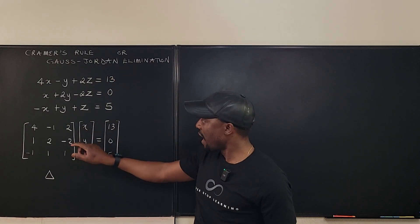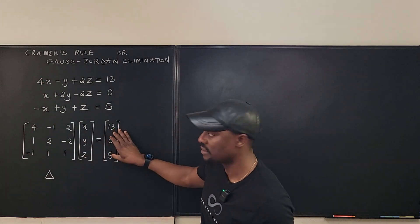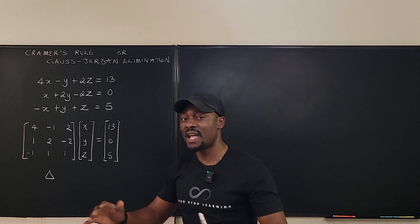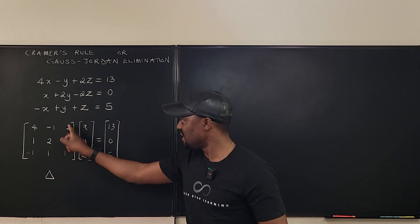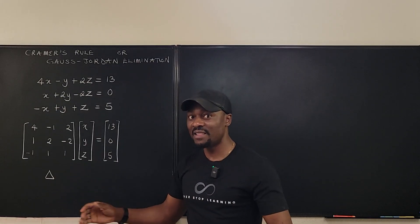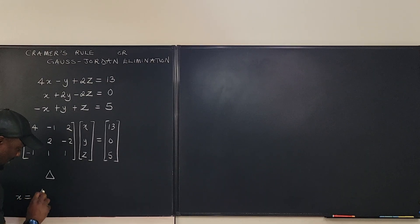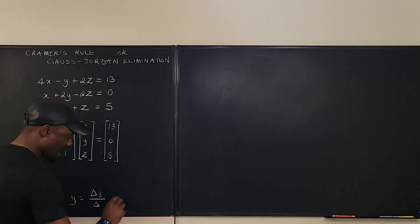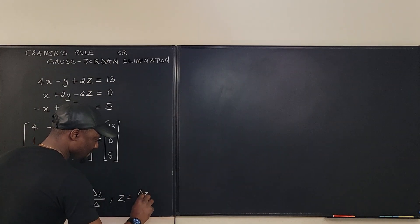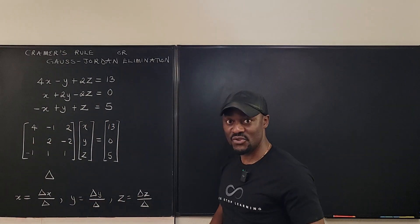If you want to solve for X, you replace the X column with your answer column and find that determinant — call it Delta X. You do the same thing: replace Y to get Delta Y, replace Z to get Delta Z. Then X equals Delta X over Delta, Y equals Delta Y over Delta, and Z equals Delta Z over Delta. You just compute Delta and the three sub-determinants to get your answers.